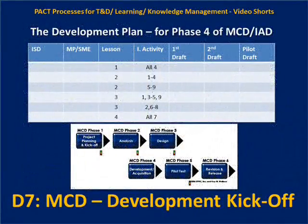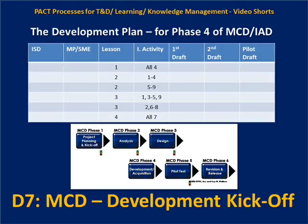Then they can be given their assignments. Some instructional developer will be given lesson one and need to cover all four of the instructional activities. Some master performer or subject matter expert may be identified to work with that instructional developer. In this case, we're showing that lesson one and all of the activities will be assigned to one set of people — the instructional developer and the master performer and/or subject matter experts. However, when we get to lesson two, we're dividing it up — taking the first four activities and assigning that to one group, and activities five through nine to another.